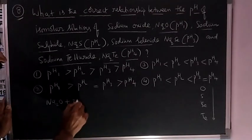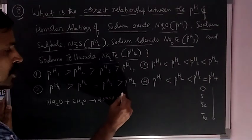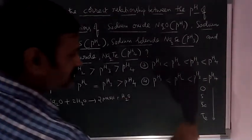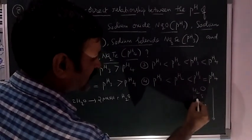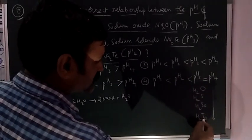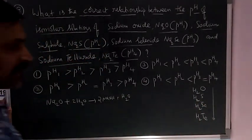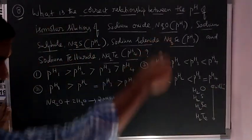Na2O, if it undergoes hydrolysis, gives sodium hydroxide along with the hydrate of sixth group elements. What are the hydrates of sixth group elements? H2S, H2O, H2Se, H2Te. Their acidity from top to bottom actually increases.